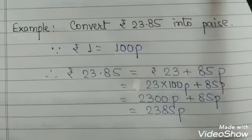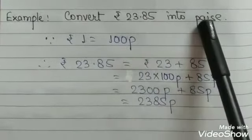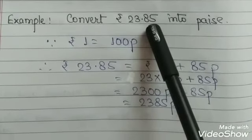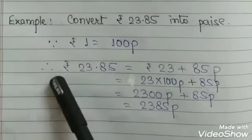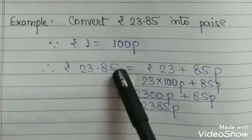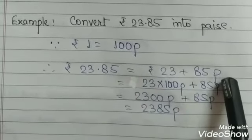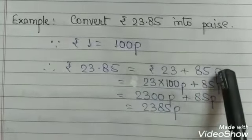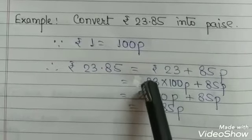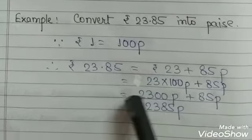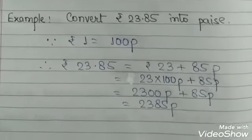To change rupees to paise, we simply multiply the number of rupees by 100. Now let's convert rupees and paise to paise. For example, ₹23.85 — since ₹1 = 100 paise, we write it as ₹23 + 85 paise. We convert only the rupees part: 23 × 100 = 2300 paise. Then 2300 paise + 85 paise = 2385 paise.